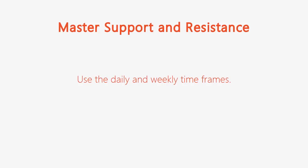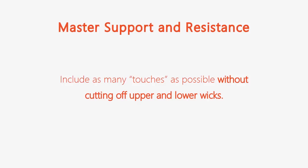A few key points: when trading price action, use the daily and weekly timeframes to find key levels. About 90% of my levels come from daily and weekly charts — roughly 70 to 80% from the daily and 20 to 30% from the weekly. Next, focus on swing highs and lows that really stick out. Include as many touches as possible without cutting off the upper and lower wicks — it's a balancing act that comes with practice.